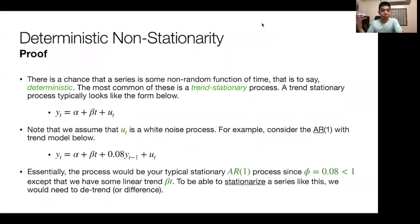This is just a further proof and another case. We have a trend stationary process in this case. We have now a beta term, which is time dependent, so that's where the trend comes in. A trend stationary process looks like this. If we assume that ut is some white noise error term, essentially, the process would be your typical stationary model, because first and foremost, we find that our phi is less than 1. And remember, phi equal to 1 is the sort of benchmark for non-stationarity. Except that we have some linear trend, which is this one, which is introducing the non-stationarity part of it. The model would have been stationary had this not been there, but it's not because that linear trend is there.